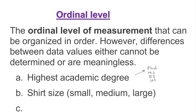The next ordinal example is shirt size. You go to the store and find sizes: small, medium, large — and nowadays custom fit and slim fit as well. This is ordinal because you can order it from small to medium to large.